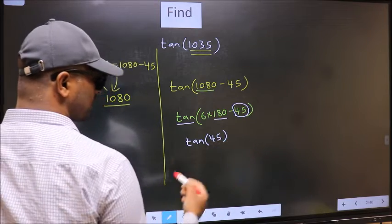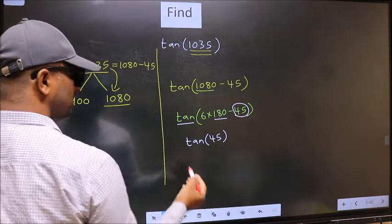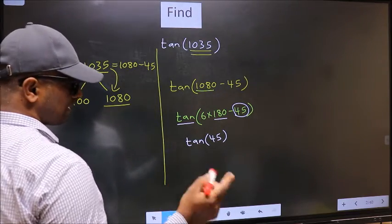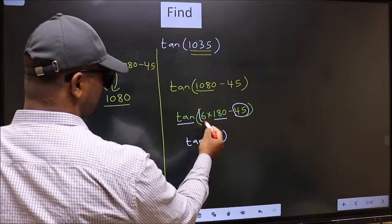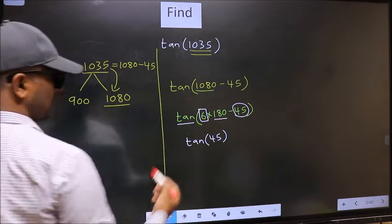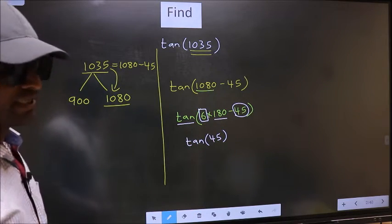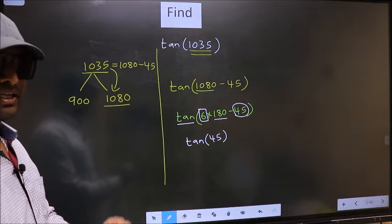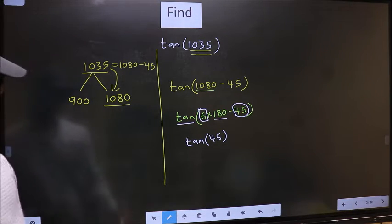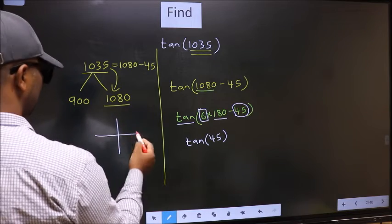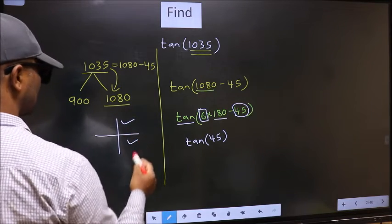Now the question is, will we get here plus or minus? To answer that, we should look at the number before 180. That is 6. And 6 is even. And all the even multiples of 180, they lie either in the first or in the fourth quadrant.